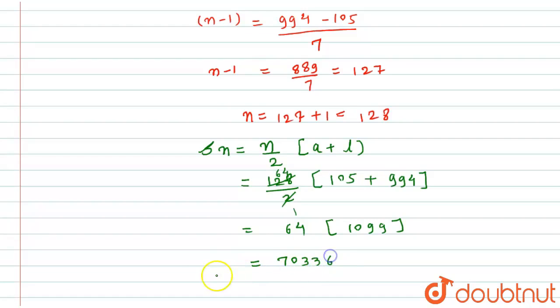Hence, the sum of all three-digit natural numbers which are divisible by 7 is nothing but 70,336. So here is the solution for this particular question. I hope you will like the solution.